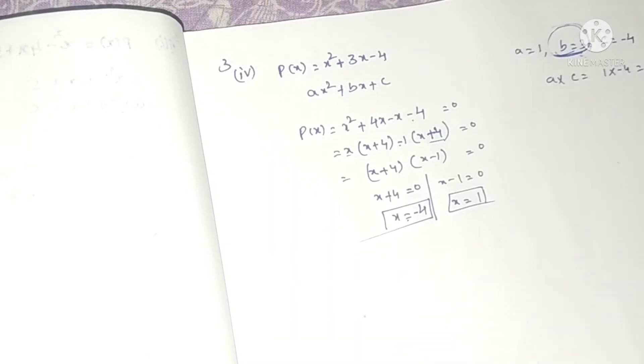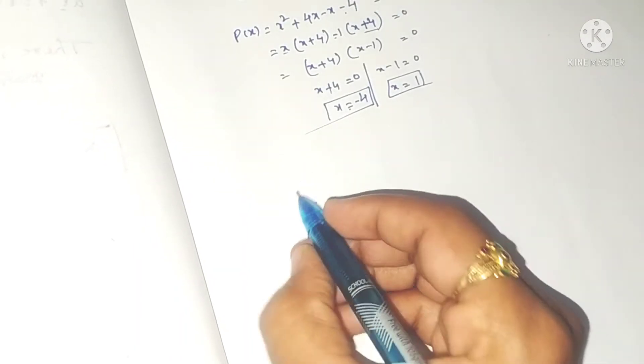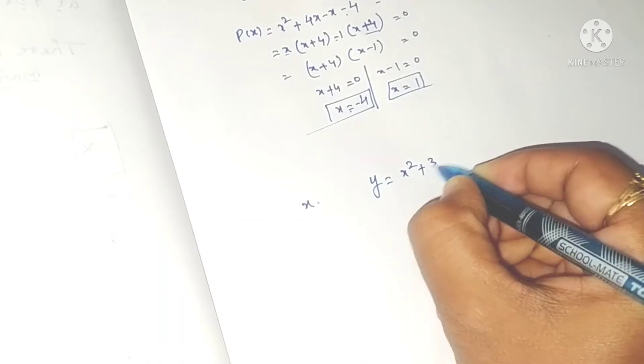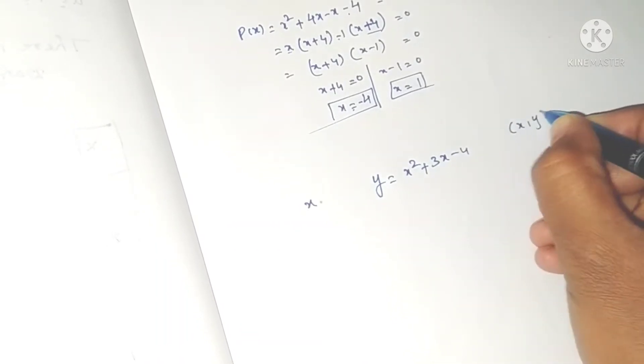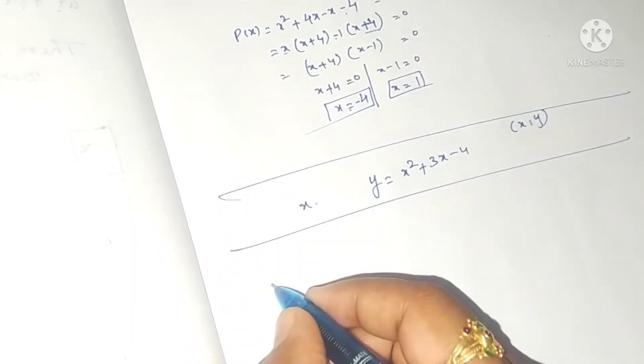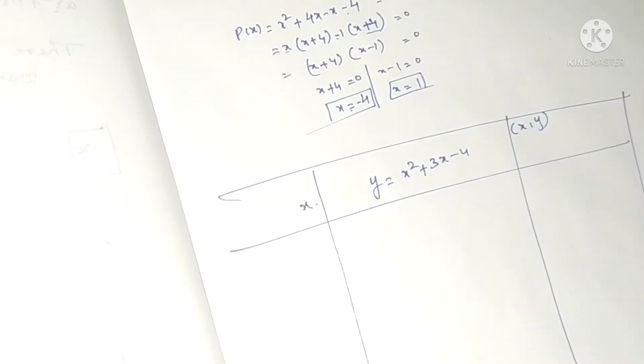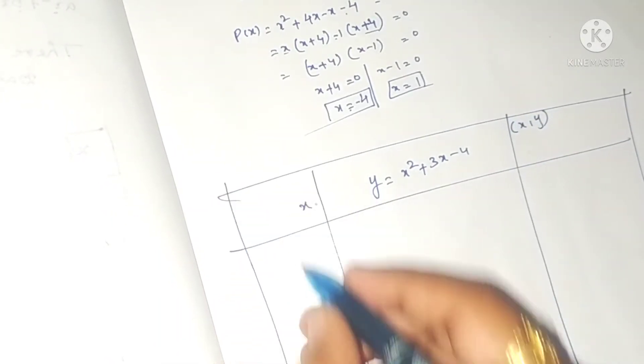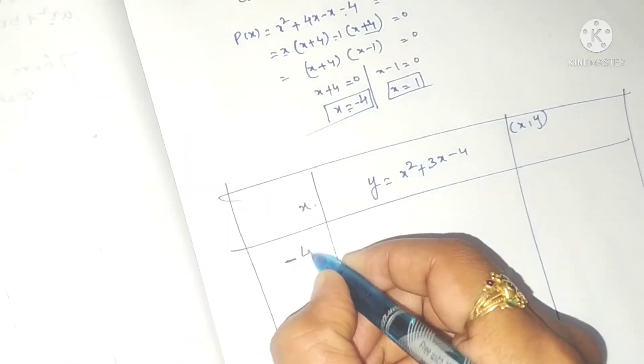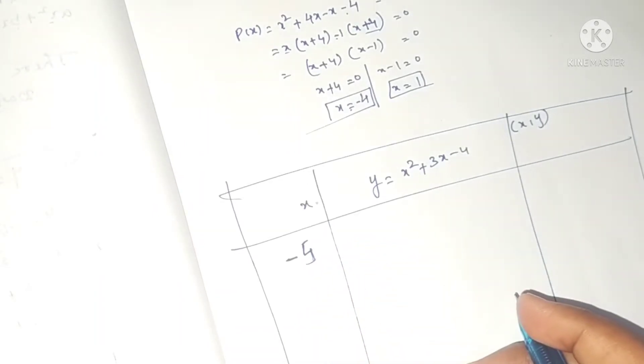The zeros of the polynomial are at minus 4 and 1, where the graph will intersect the x-axis. Now we need to find points for the graph by substituting x values.